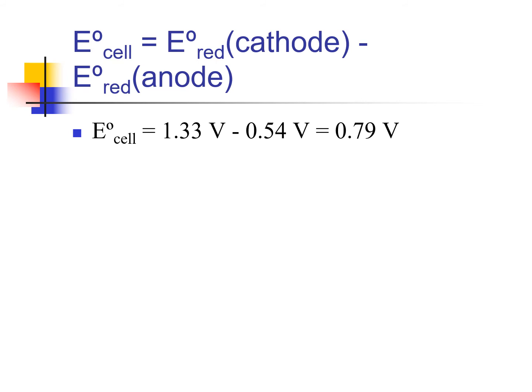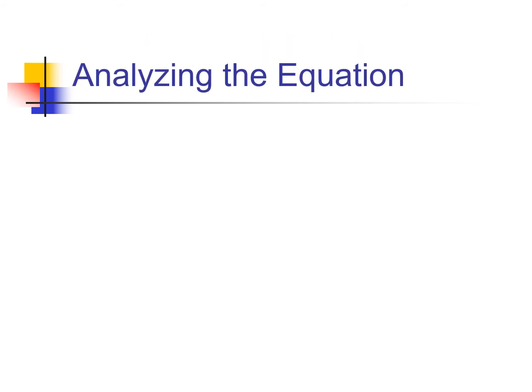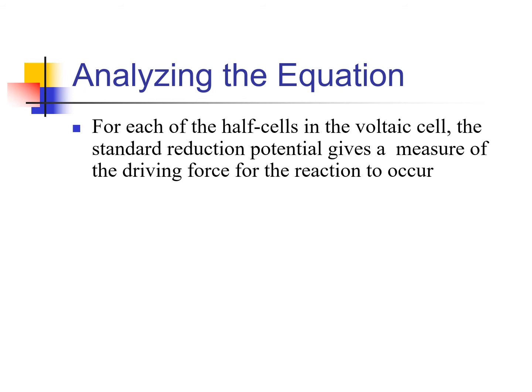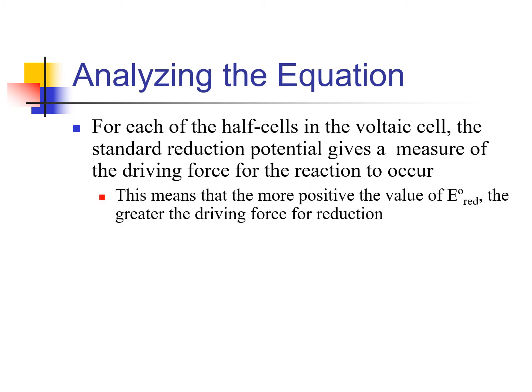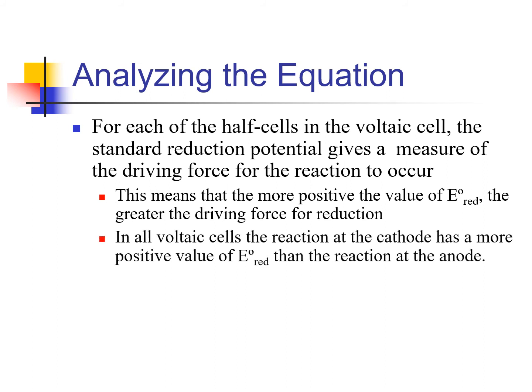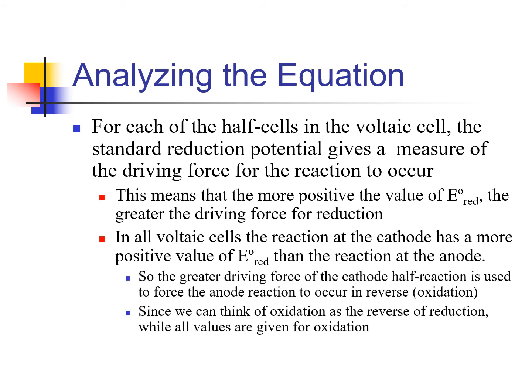The more positive the reduction potential value, the greater the tendency of that reactant to be reduced — meaning the greater the chance of something else being oxidized. The metal activity series from earlier in chemistry turns out to be the reduction potentials in reverse, because it's all about oxidation. The activity series is the opposite of the reduction potential series — for instance, lithium at the top of the activity series corresponds to a very negative reduction potential.